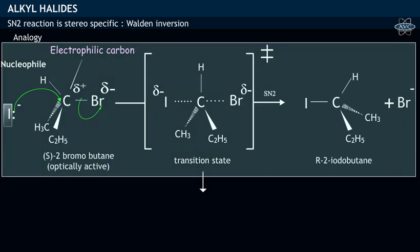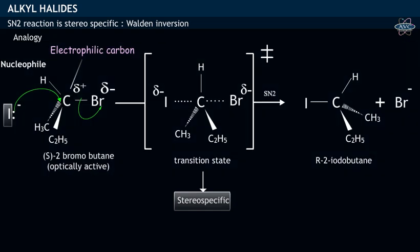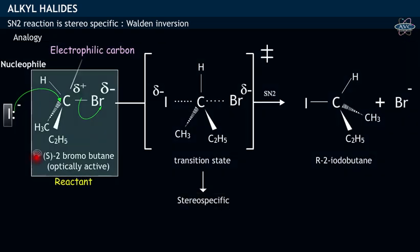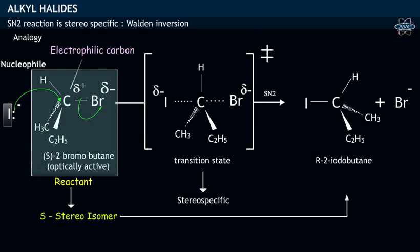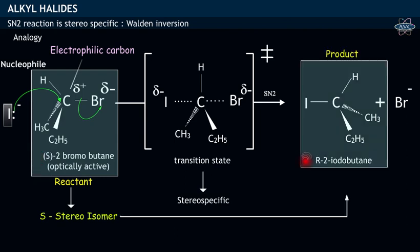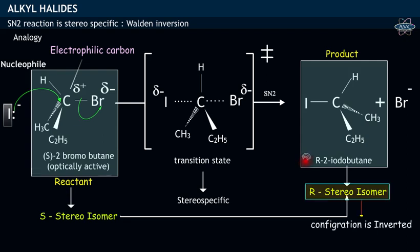The reaction is said to be stereospecific, as the reactant 2-bromobutane having one type of stereoisomer, that is S, is converted into the product 2-iodobutane having another specific stereoisomer, R, with inverted configuration.